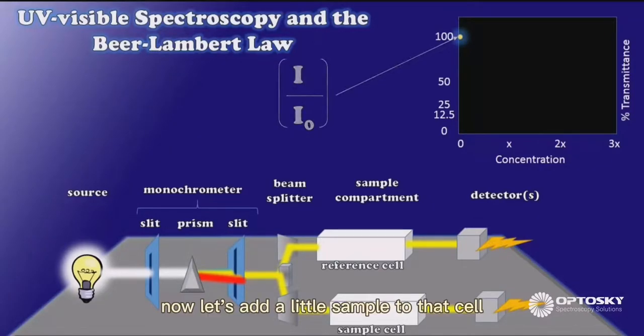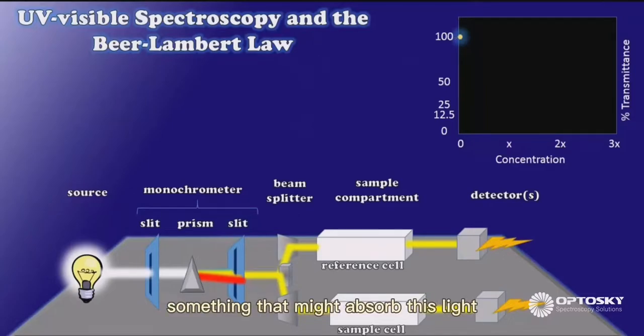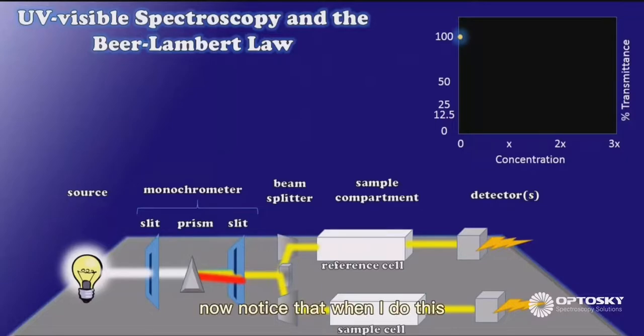Now let's add a little sample to that cell, something that might absorb this light. Now notice that when I do this, the intensity of the light exiting the sample cell has decreased.